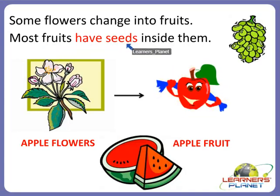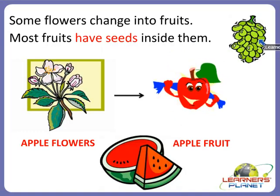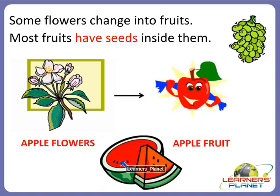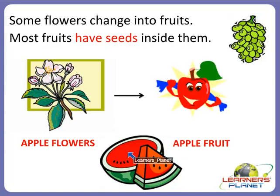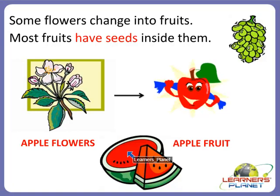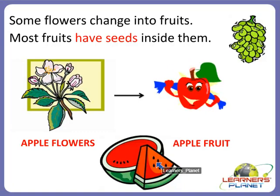Most fruits have seeds inside them. For example, grapes and watermelon — there are many seeds in watermelon, and papaya also has many black-colored seeds. Most fruits have seeds, but there are some fruits that do not have seeds inside them.